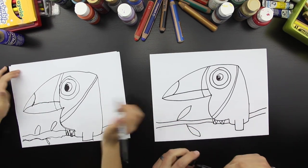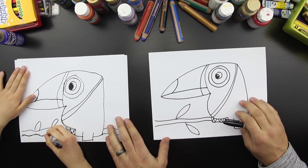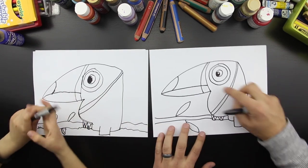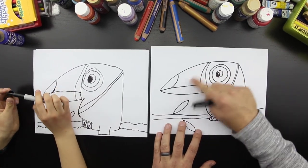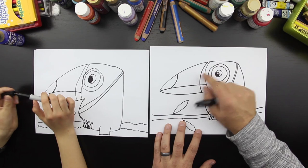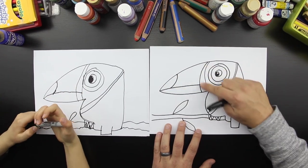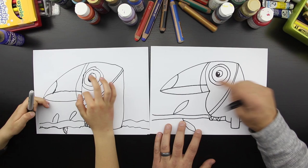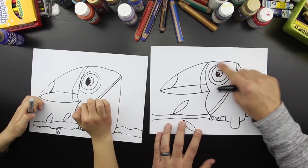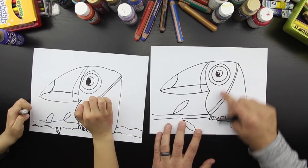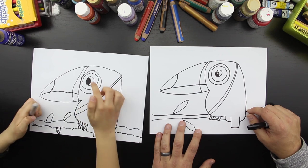And then when you color it in, we should do a search on Google to look at the different colors for the toucan. It'll have like a yellow or an orange beak, usually a black piece up here, and another color here like green or blue, and then this part can be white, this could be black, and then some colors on his eye. We'll look him up, okay?